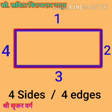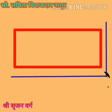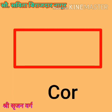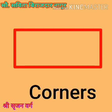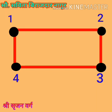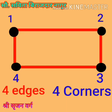Now look at the points where two or more sides or edges meet. Those points are called corners. Count the corners of the rectangle: 1, 2, 3, 4. It means rectangle has four edges and four corners.